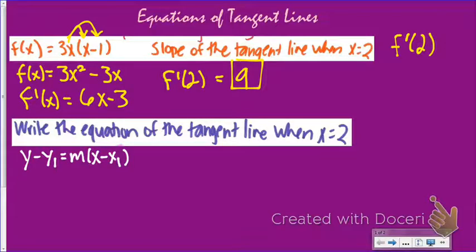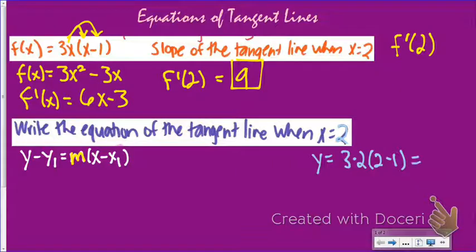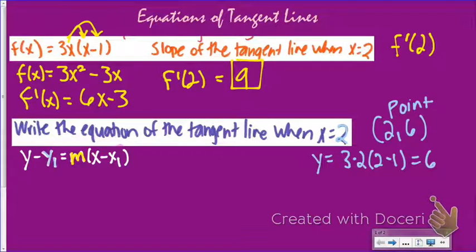I already have my slope, so I can fill that in. The slope of this tangent line is 9, so m equals 9. The x1 value is 2, that's already given. The only thing I need to find is my y value. To find y on the original equation, I plug in 2: 3 times 2 times 2 minus 1, which gives 6 times 1, equaling 6. So my point is (2, 6). Using point-slope formula, I get y minus 6 equals 9 times x minus 2.